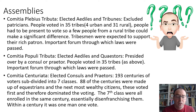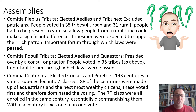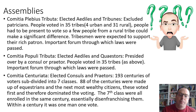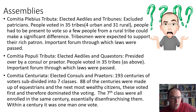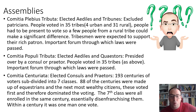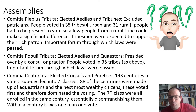The comitia centuriata elected consuls and praetors, making it really important. The Roman people were divided into 193 centuries, subdivided into seven classes. 88 of the centuries were made up of equestrians and the next most wealthy citizens, who voted first and therefore dominated the voting — getting on for half the total. The seventh class were all enrolled in the same century and were the poorest in Roman society, so they were effectively disenfranchised because though there was often a large number of people, their vote was proportionally insignificant as they were all in the 193rd century. Within a century it was one man, one vote, but the higher up in the classes you were, the more significant your vote would be. It was an important forum through which laws were passed.